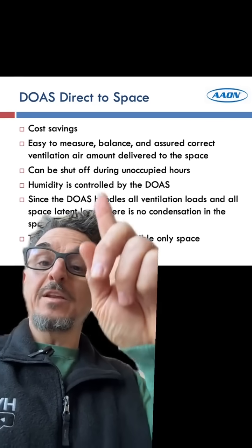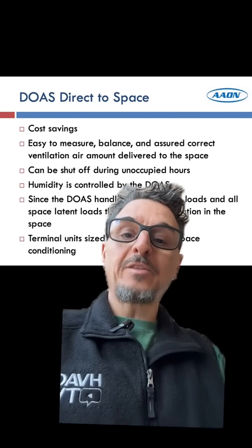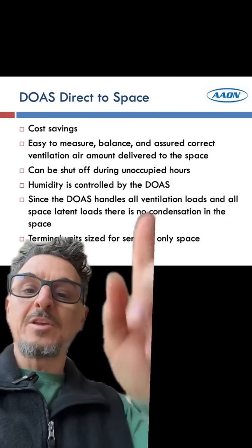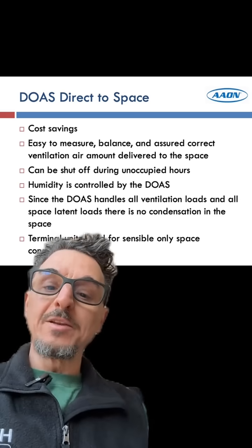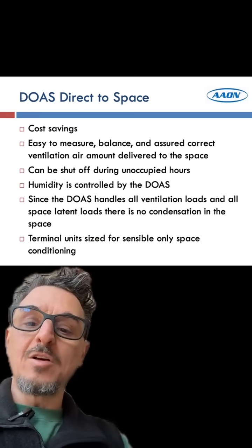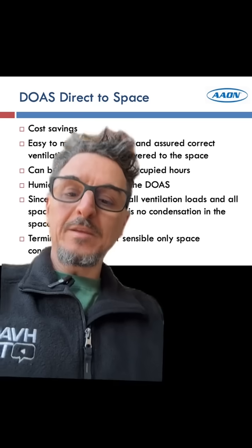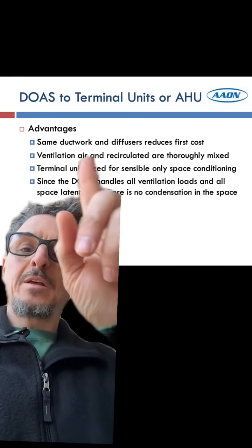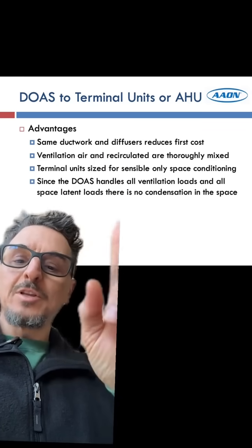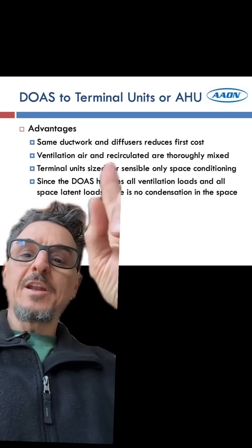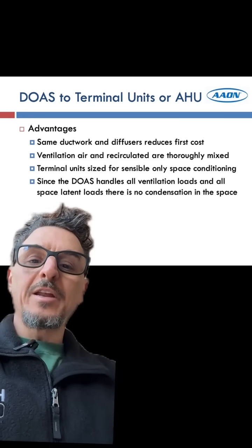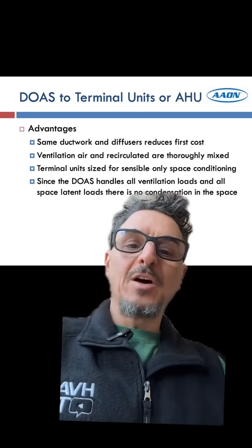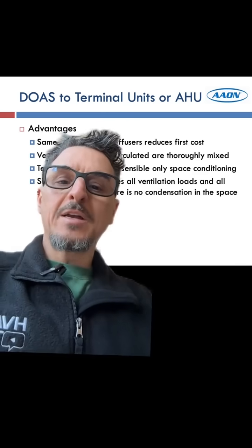A few advantages of the direct-to-space application: it saves on cost, it's easy to measure and balance, can be shut off during unoccupied hours, and humidity is controlled — decoupled and managed by the DOAS system. It handles all ventilation loads, and terminal units are sized for sensible only. For application two — serving to the back of terminal units — you're using the same duct and diffusers, reducing cost. The ventilation air and recirculated air are thoroughly mixed, terminal units are sized for sensible only, and since the DOAS handles all ventilation and space latent loads, there's typically no condensation in the space.